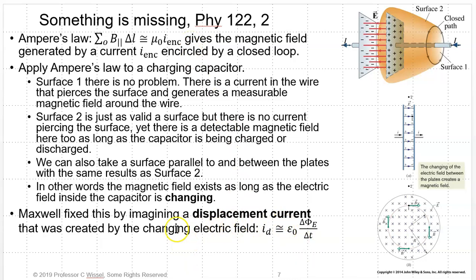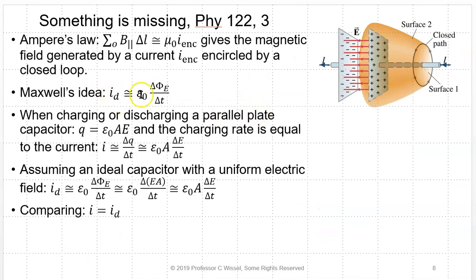Maxwell fixed this by imagining something he called a displacement current, created by the changing electric field. The displacement current I_D equals ε₀ times the time rate of change of electric flux. When you charge or discharge a parallel plate capacitor, Q equals ε₀ times the area of the plate times the electric field. The charging rate equals the current, which is the time rate of change of charge, and that equals ε₀A times dE/dt. Maxwell's displacement current is ε₀ times the time change of electric flux, and since flux is E times A, I_D equals ε₀A times dE/dt.